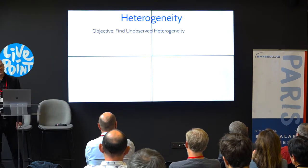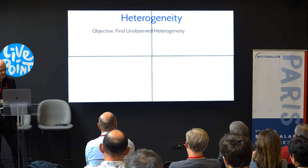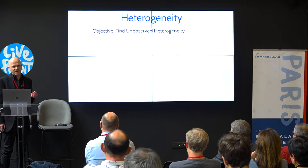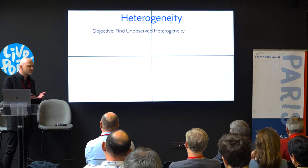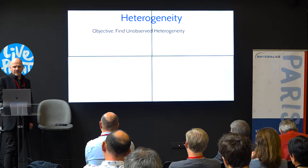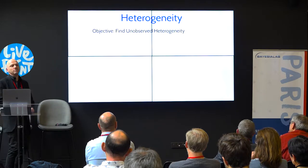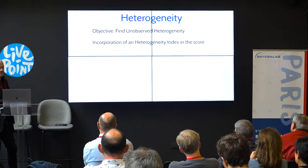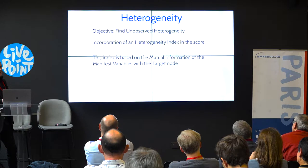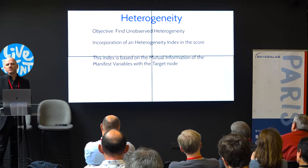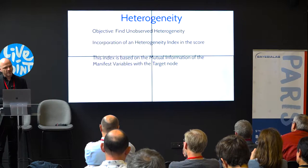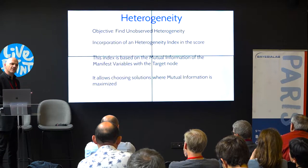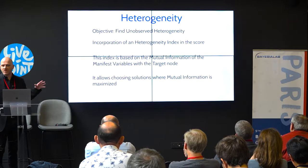We also worked on heterogeneity. The idea is that there is a hidden variable that explains everything — you have this variable, but when you look at the mutual information, there is almost nothing. We try to create this latent variable to maximize the mutual information. We now have a heterogeneity index integrated in the score, which measures the mutual information between all manifest variables and the target node. The objective is to find clusters that increase the sum of all mutual information across the different factors.